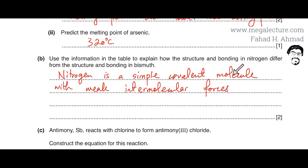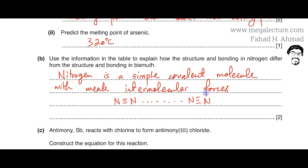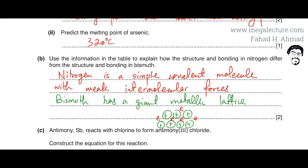Nitrogen is a simple covalent molecule with weak intermolecular forces. It is a diatomic N2 molecule — tiny N2 molecules with very weak intermolecular forces between them, which is why the molecules don't attract each other strongly. They exist in the gaseous state, with each N2 molecule moving freely.